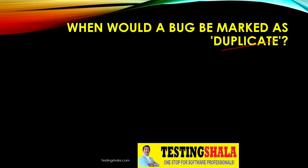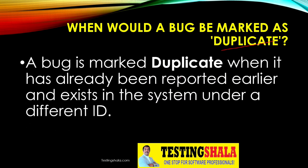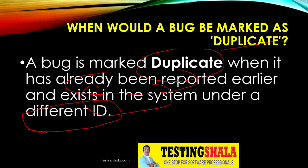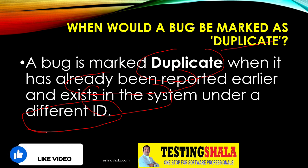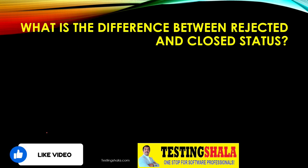When would a bug be marked as duplicate? A bug is marked as duplicate when it has already been reported earlier and already exists in the system under a different bug ID. Those defects are then marked as duplicates.